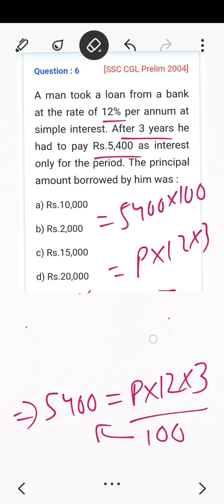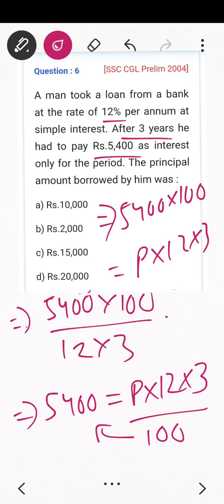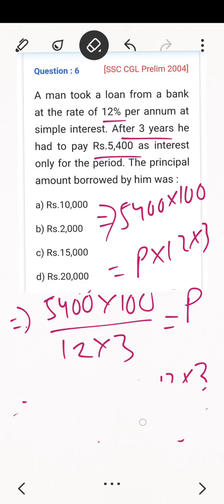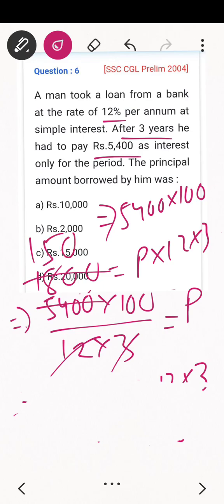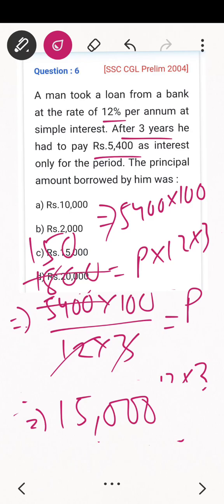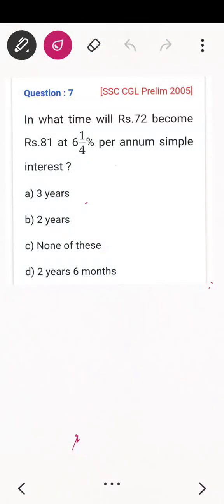Cross-multiplying: 5,400 × 100 = P × 12 × 3. That gives 5,400 × 100 = P × 36. So P = 540,000 ÷ 36 = 15,000. The value of the principal is rupees 15,000.